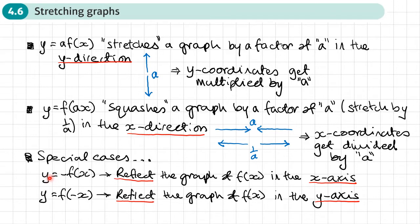The two special cases: if you see y equals negative f of x — a negative sign in front of the original graph — you reflect the original graph in the x-axis. And if you see f of negative x — a negative sign inside the bracket — you reflect the original graph in the y-axis.